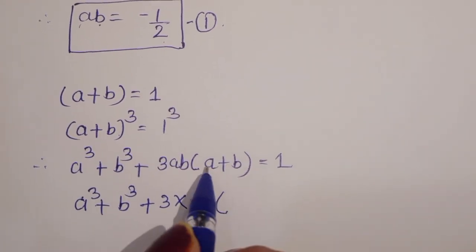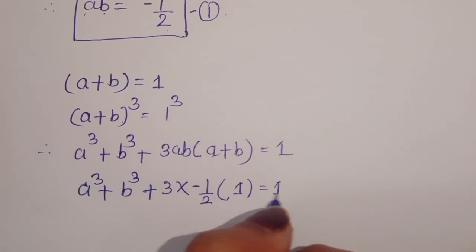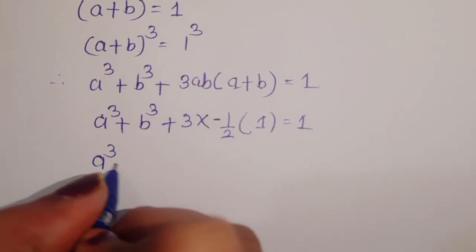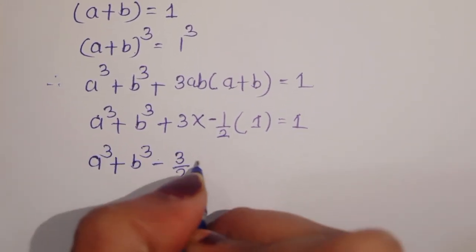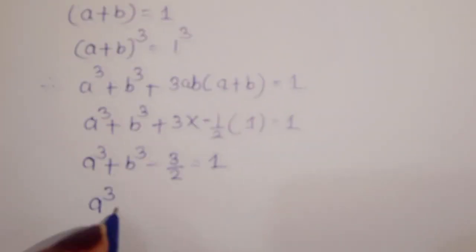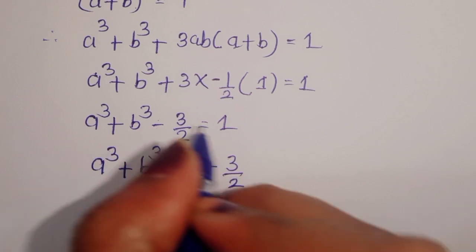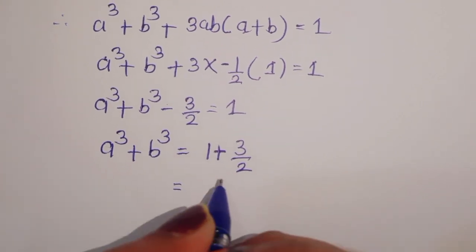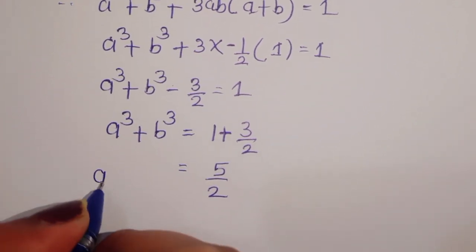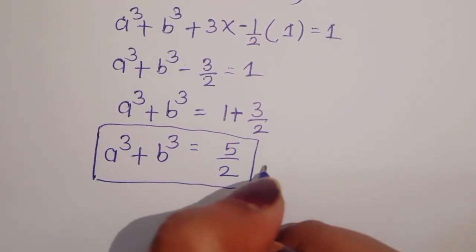We know ab is equal to minus 1 upon 2, and a plus b is equal to 1. So: a cube plus b cube plus 3 times (minus 1 upon 2) times 1 is equal to 1, giving a cube plus b cube minus 3 upon 2 is equal to 1. Therefore a cube plus b cube is equal to 1 plus 3 upon 2, which is 5 upon 2. This is equation 2.